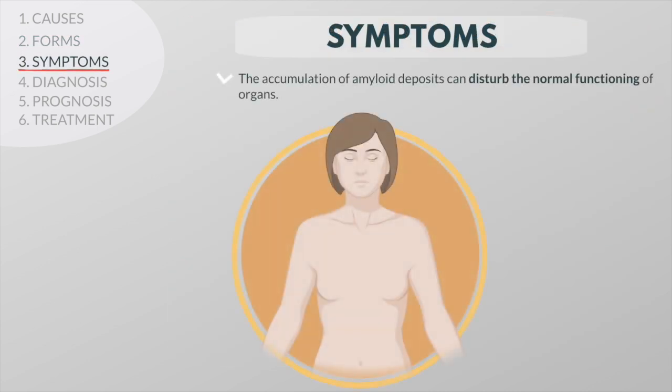The accumulation of large amounts of amyloid deposits can disturb the normal functioning of many organs. Some people have few symptoms, whereas others develop severe, life-threatening disease. Common symptoms of amyloidosis include fatigue and weight loss, while other symptoms depend on where the amyloid deposits build up.